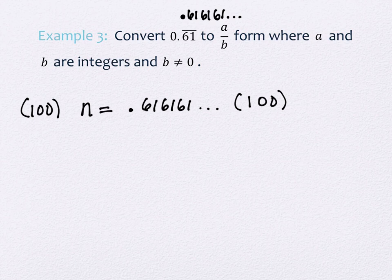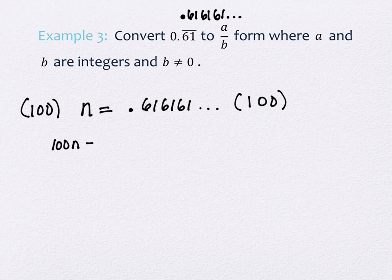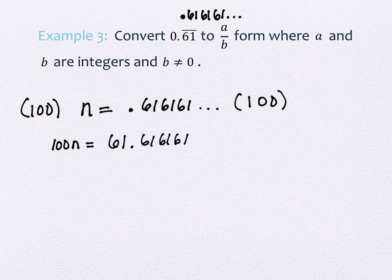That right there is the trickiest part. People multiply by the wrong number all the time, and then they get stuck. So if you get stuck, you probably multiply by the wrong number. What happens? Well, on the left-hand side, this is just 100n. But what happens on the right-hand side when I have 0.616161 and on, and I multiply by 100? I get 61 and then 616161 forevermore.